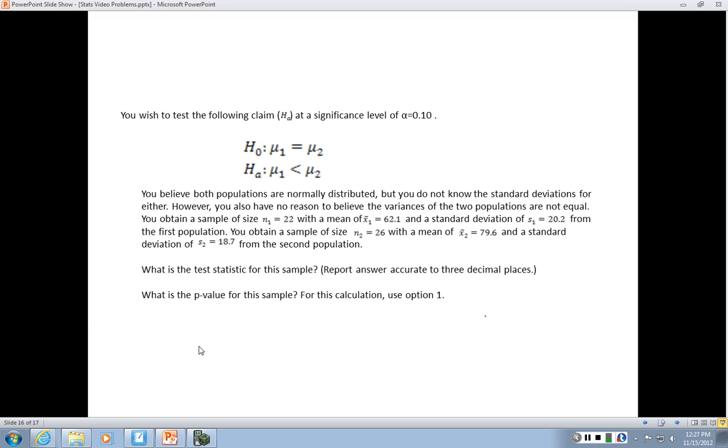You wish to test the following claim at a significance level of alpha equals 0.10. The null hypothesis is that the means of your two populations are equal. The alternative hypothesis is that the mean of your first population is less than the mean of the second population.